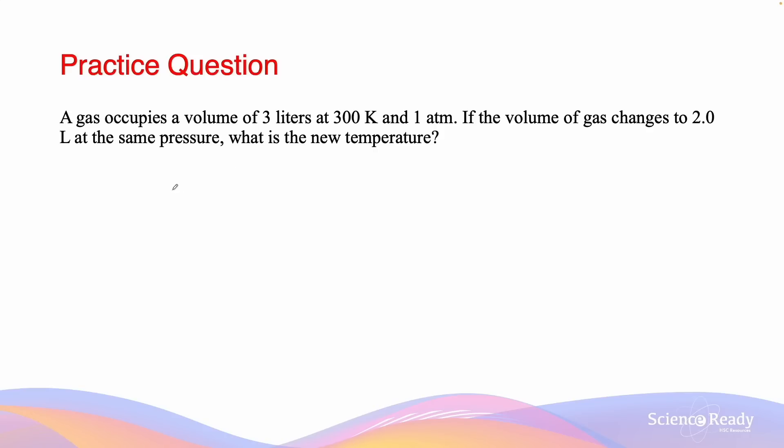So we can use, again, the same relationship as previously, V1 over T1 equals V2 over T2, to calculate our answer. The initial volume, V1, is equal to 3 liters, and the initial temperature is equal to 300 Kelvin. This time, we are given the new volume, V2, which equals 2 liters, but we are not given the new temperature.